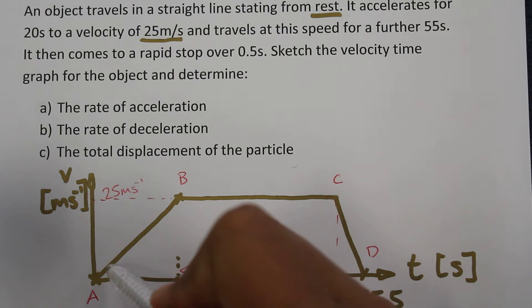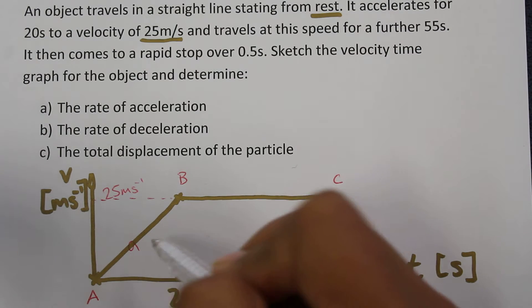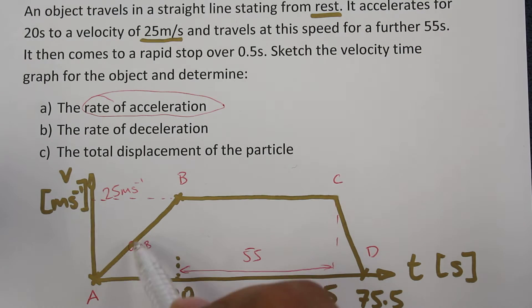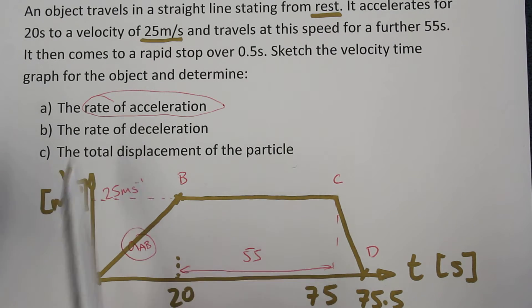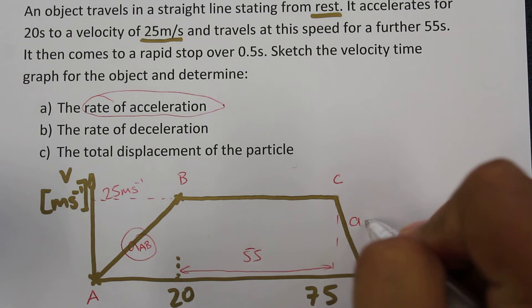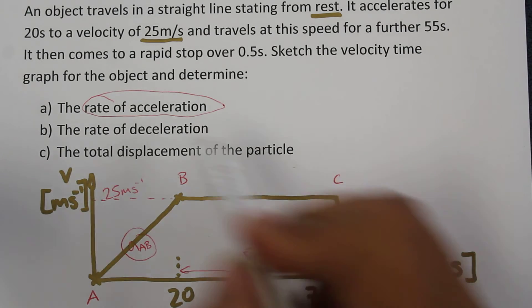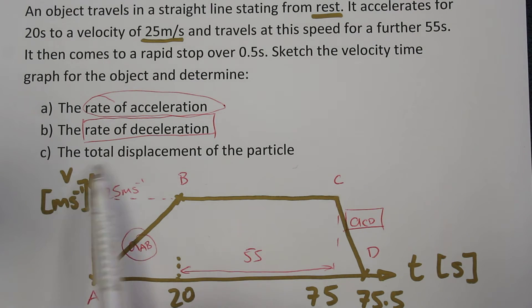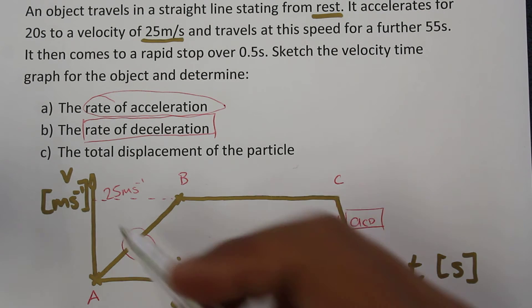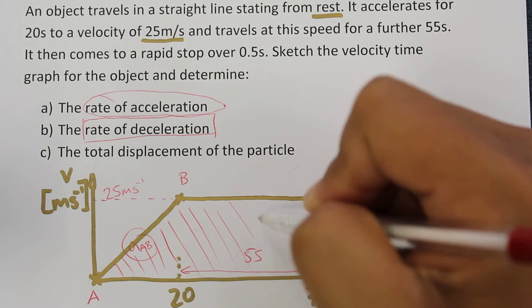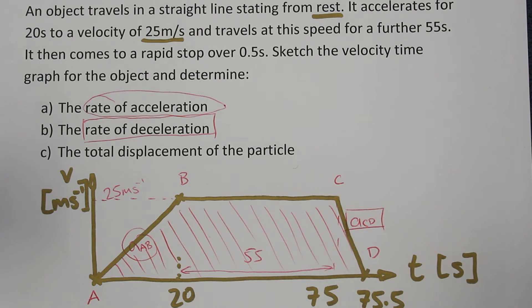Question A asks us to find the gradient of the line from A to B — this is the rate of acceleration. Question B asks us to find the rate of deceleration, which is the acceleration going from C to D. The total displacement of the particle will end up being the area underneath the graph — this is purely to do with the integral relationship between velocity and displacement.